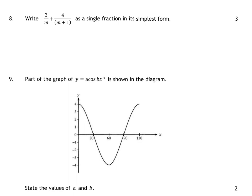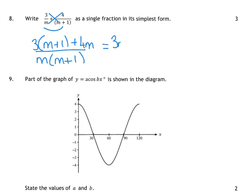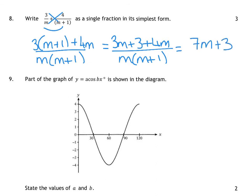Question 8 is your algebraic fractions. I'm going to do smile and kiss for this one. The kiss part makes your denominator M bracket M plus 1. The smile part gives you 3 times the bracket plus 4M. So I've got 3M plus 3 plus 4M all over M bracket M plus 1 — I never multiply out the bottom line. Tidy that up: you have 7M plus 3 all over M bracket M plus 1.